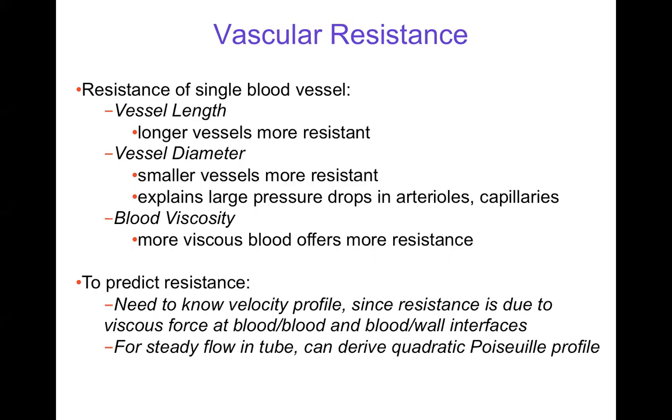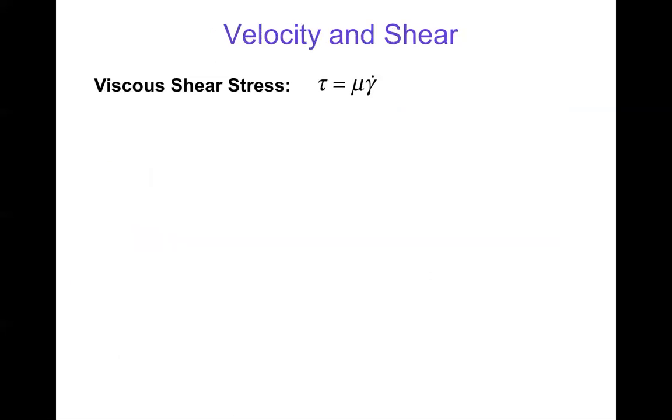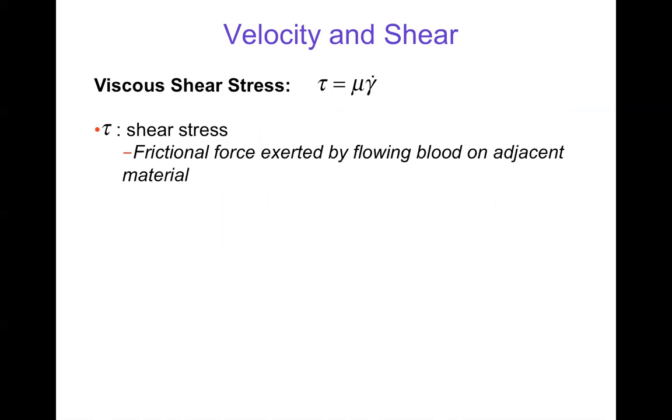For steady flow in a tube or blood vessel, we can derive a quadratic velocity profile, which we call the Poiseuille profile, which gives us Poiseuille's resistance law. Before we do that, we'll talk about velocity and shear. Viscous shear stress tau is the viscosity mu times the shear rate gamma dot.